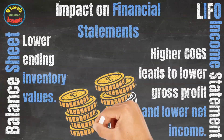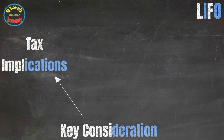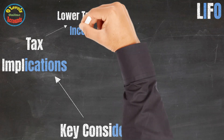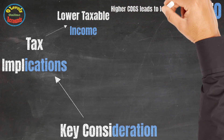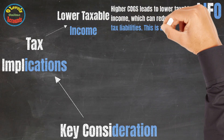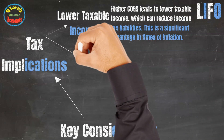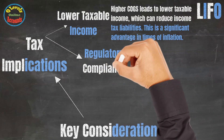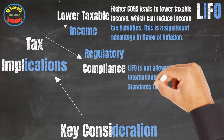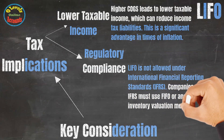The first key consideration is tax implications. First, lower taxable income: higher cost of goods sold leads to lower taxable income, which can reduce income tax liabilities — a significant advantage in times of inflation. Second, regulatory compliance: LIFO is not allowed under International Financial Reporting Standards. Companies using IFRS must use FIFO or another inventory valuation method.